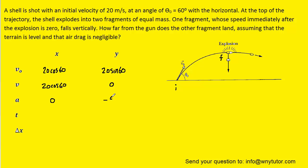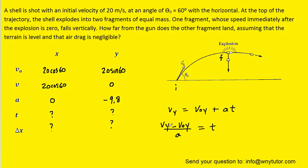The acceleration in the y direction will be negative 9.8. We don't yet know the time required to reach that point, nor do we know the displacement in the x and y direction. Let's go ahead and solve for the time using the information in the y direction. We can subtract v₀y and divide by acceleration to solve for time, then plug in the known values for final velocity, initial velocity, and acceleration.